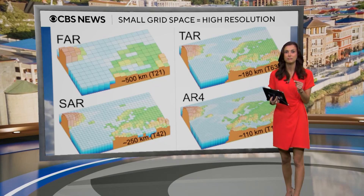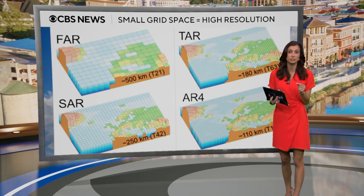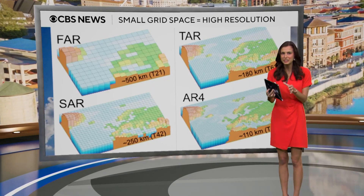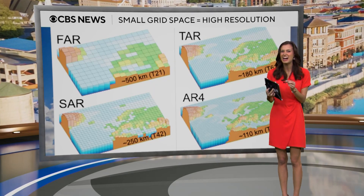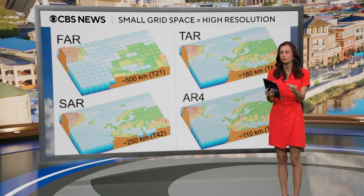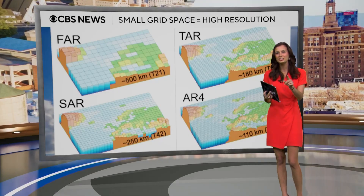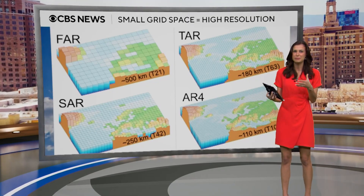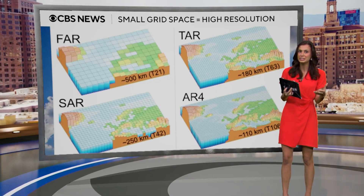Remember when I said you have to think about the Earth as a grid? The smaller the grid box, the higher the resolution — just like a phone with more pixels creates a picture with better clarity.